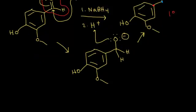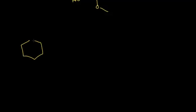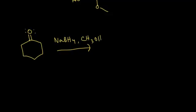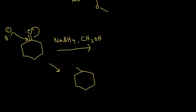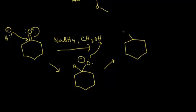Let's do another one — this time a ketone. We'll do cyclohexanone, and we're going to add NaBH4 with methanol in one step. Think about sodium borohydride as a source of hydride anions. The hydride attacks that carbonyl carbon and kicks the electrons off onto the oxygen. Drawing the intermediate: we form a new bond to what used to be the carbonyl carbon, the oxygen now has three lone pairs and a negative one formal charge, and it picks up a proton from methanol. Our final product is cyclohexanol.